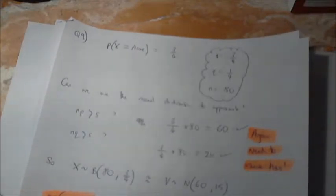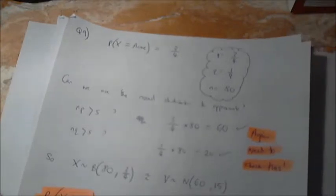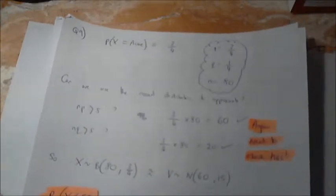So, so far, what have I done? Step one, I've found out some values at the top. I've put it down into what P is, Q is, N is. Step two, I've checked to see whether we can use the normal distribution. We can. And step three, I've noted down what our normal distribution is actually going to be.